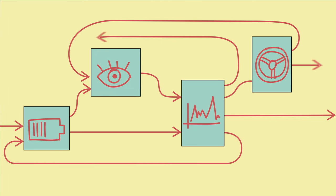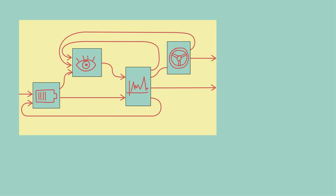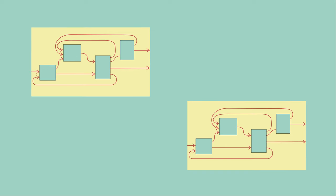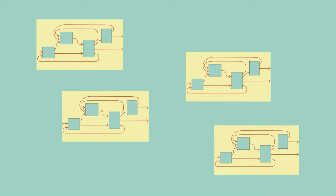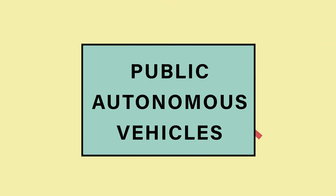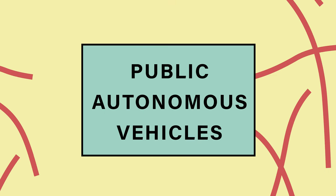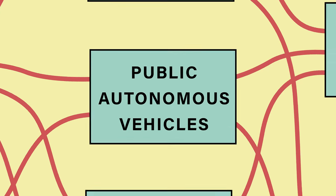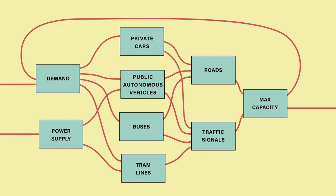Category theory allows us to tame complexity. With it we can model systems coherently at different levels of detail and scale, and we can decompose problems into modular pieces. For example, the AV previously analyzed in terms of its components might itself be a component in the mobility network of a city.